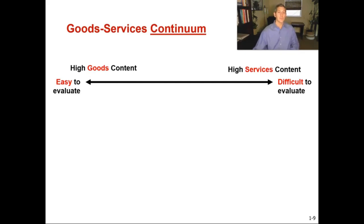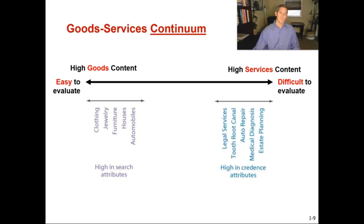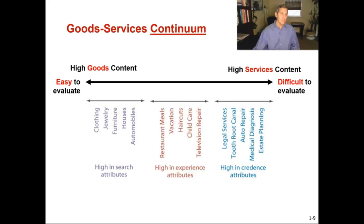The goods-services continuum shows that on the far left, things high in goods content are easier for us to evaluate — clothing, jewelry, furniture, housing — and they are high in search attributes. Like the Tacoma example, I knew exactly what I was looking for and it was easy to evaluate. On the far right, things high in services content are more difficult to evaluate and high in credence attributes — estate planning, my accountant. In the middle is a combination of goods and services content, evaluated through experience attributes — did a restaurant, vacation, or haircut meet our expectations after experiencing it?